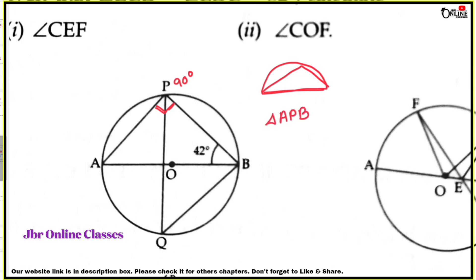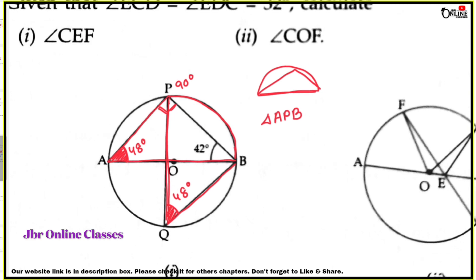In triangle APB, angle PAB equals 90 degrees and angle PBA equals 42 degrees. So angle APB equals 180 minus (90 plus 42) equals 48 degrees. Since angles PQB and APB lie on the same segment, angle PQB equals 48 degrees.